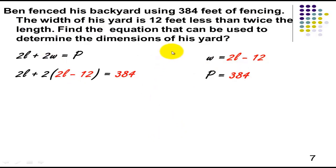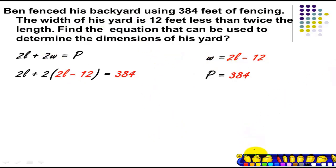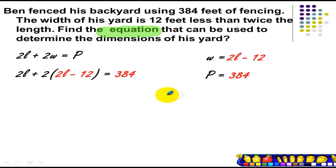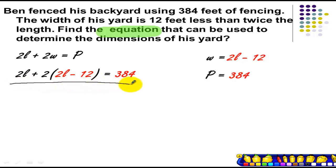Since the problem is only asking us to find the equation to determine the dimensions of his yard, we are done. We just need to get the equation: 2L plus 2 times the quantity (2L minus 12) equals 384.